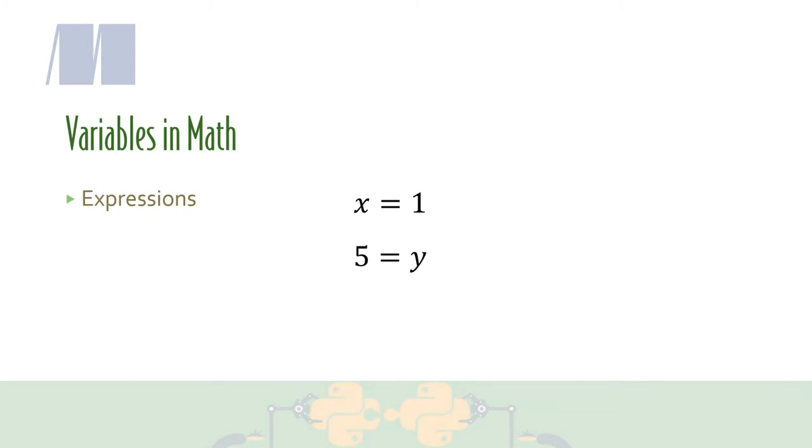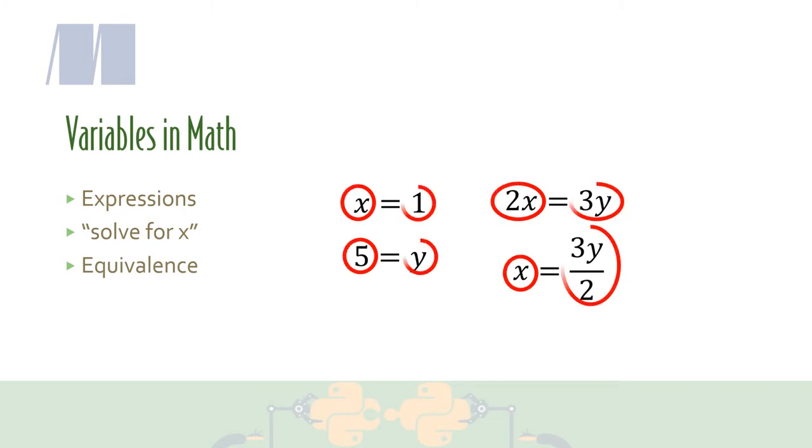In math, you solve for x. So if you have the expression 2x is equal to 3y, you solve for x to be 3y divided by 2. Anything with an equal sign in math is a statement of equivalence. The thing to the left of the equal sign is equivalent to the thing to the right of the equal sign.